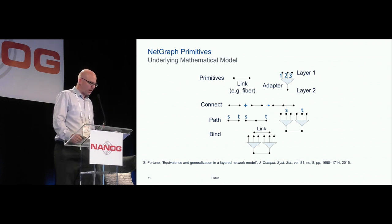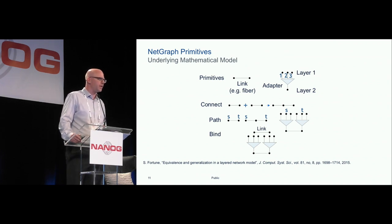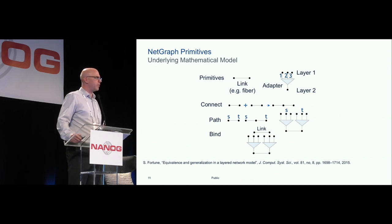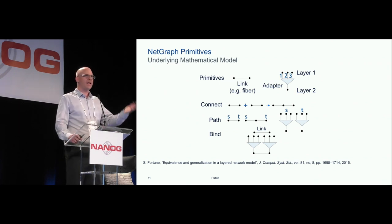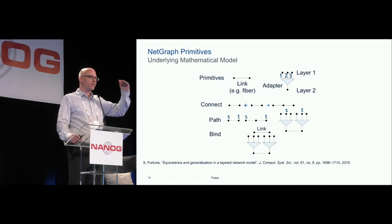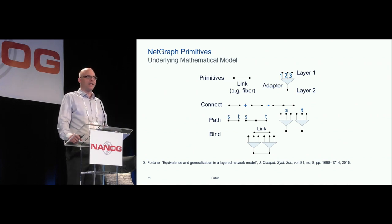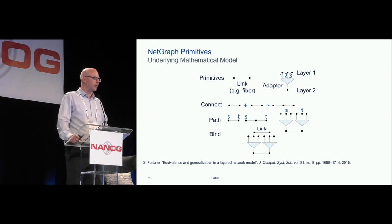We introduce something called NetGraph, which we're putting into NetUnix. It doesn't replace other efforts — it adds explicit network layering and topology information into the network model. Transport networks are much more complex than just IP over WDM: you have IP, MPLS, Ethernet, OTN, and WDM layers. Without a consistent, traceable description of your network, you can't run algorithms on top — that's what NetGraph achieves. Under the hood, NetGraph defines primitives: links (fiber connections), and adapters that take you from one layer to another, enabling connectivity tracing and a consistent network view.